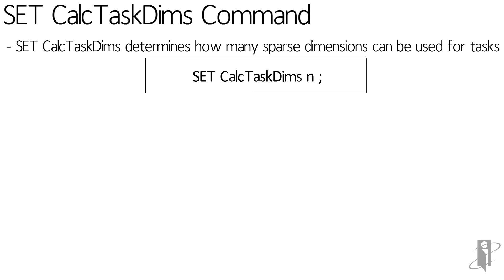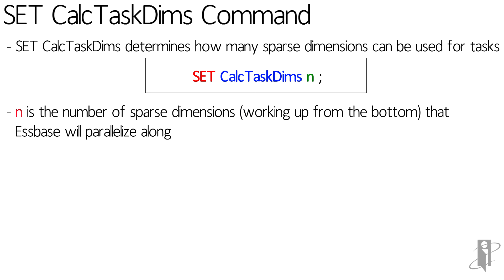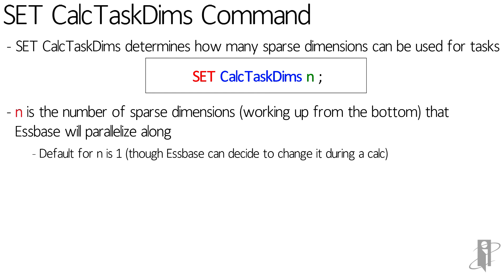The syntax is simple: it's just SET, space, CalcTaskDims, space, and then a number. That number can be up to however many sparse dimensions you have in your outline. Don't worry if you miscount — if you set the number too high, it's going to drop it down to the number of sparse dimensions.